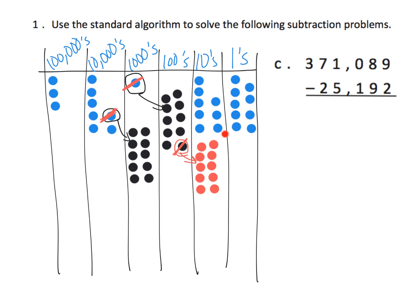Now let's take a look at what that would look like in the standard algorithm technique. I have nine, take away two — that's golden. I have eight, take away nine — I can't do that right now, so I go two columns over. I take this thousand, meaning now I'll have zero, and cash it in for ten hundreds. Then I take one of these hundreds, leaving nine hundreds, and cash it in for ten tens, so I have eighteen tens.